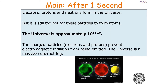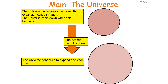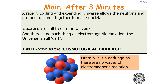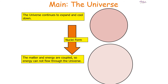After one second, electrons, protons, and neutrons form in the universe, but it's still too hot for these particles to form atoms — about 10¹¹ degrees Celsius. The universe continues to cool and expand. After three minutes, the rapidly cooling and expanding universe allows neutrons and protons to clump together to make nuclei. Electrons are still free and there is no electromagnetic radiation. The universe is still dark — what we call the cosmological dark age — and matter and energy are coupled so energy cannot flow through the universe.